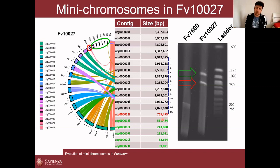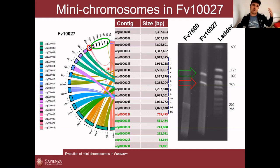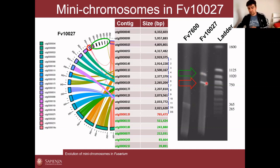By now it is clear that the Italian strain we sequenced with nanopore has about 13 chromosomes — significantly more than the 11 chromosomes reported by Li Juma for Fusarium verticillioides 7600. So we have two additional chromosomes ranging in size between 750 KB and 1 MB.